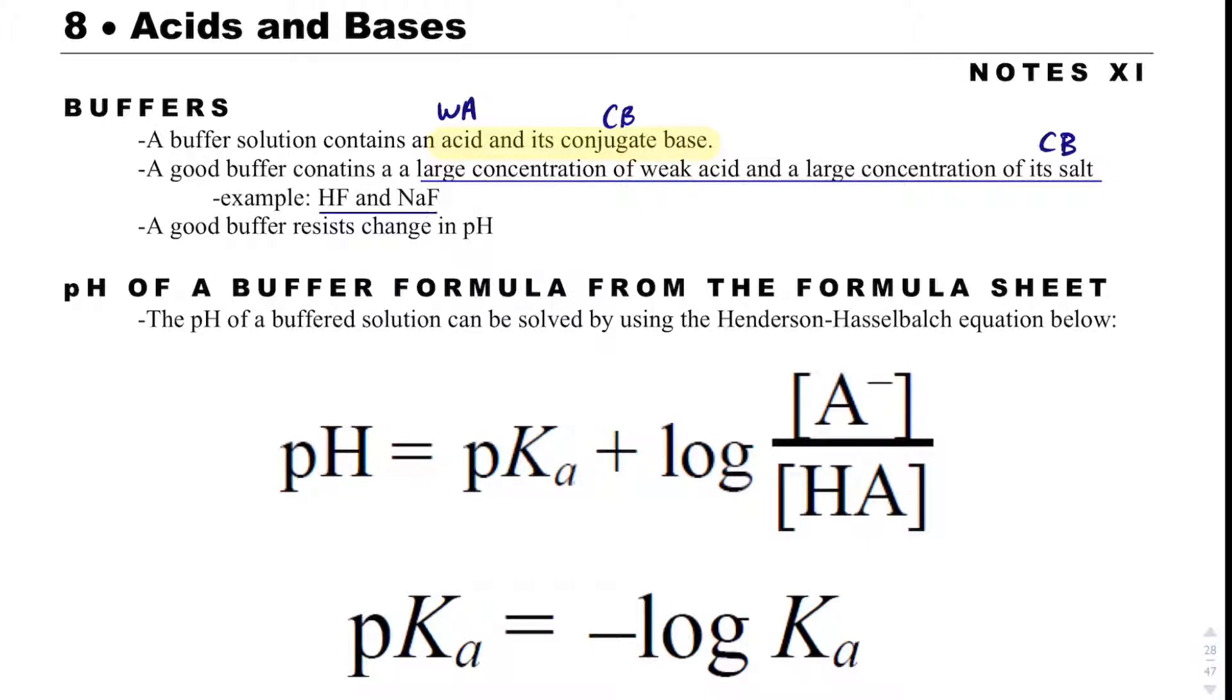The buffer is going to have large concentrations of that weak acid and of its conjugate base. For example, we could have HF and NaF, and that is its salt, but the conjugate base is F minus. What a buffer does is it resists changes in pH. That doesn't mean that it won't change pH, but as long as you don't add too much acid or base to a buffered solution, the pH will only change slightly.